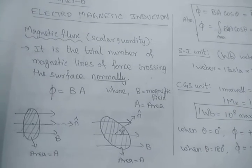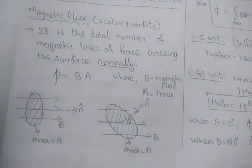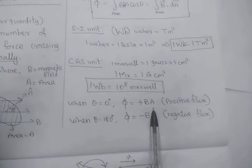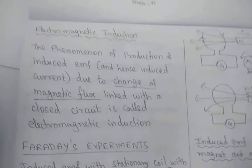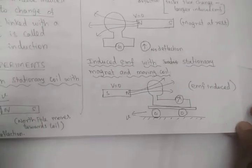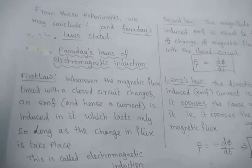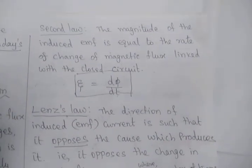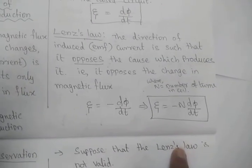So very clearly we have studied: what is magnetic flux — the number of magnetic field lines; the relation between magnetic flux and magnetic field with respect to area is pi equal to BA, in vector form pi equals B vector dot A vector, that is BA cos theta. We studied the SI unit and CGS unit of magnetic flux. Electromagnetic induction — whenever there is a change in magnetic flux, EMF is induced — was experimentally proved by Faraday's experiments. Faraday's first law states how the EMF is induced, second law explains the magnitude of the induced EMF, and Lenz's law describes the direction of the induced EMF.